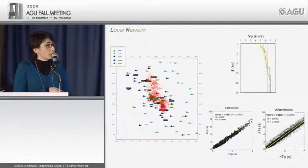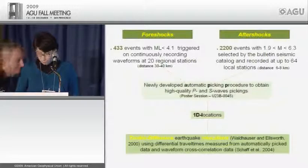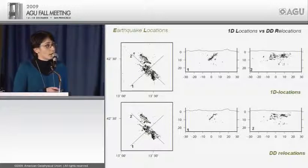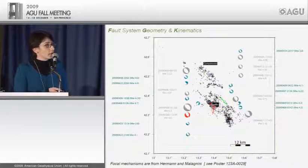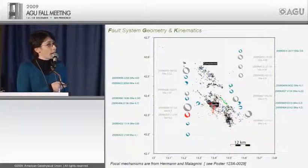In map view with foreshocks in red and aftershocks in black, the aftershocks occur on two main fault planes: a southern fault plane and a northern fault plane. Focal mechanisms, computed by Hermann and Malagnini for events with magnitude greater than 4, show all are normal fault kinematics, except two events to the south of the fault system which show a strike-slip left-lateral component — these are also the deepest earthquakes recorded during the aftershock sequence.